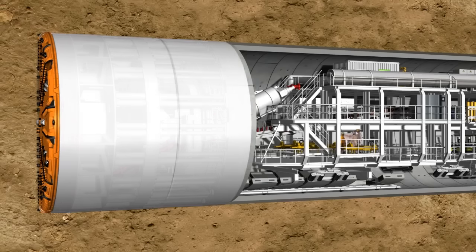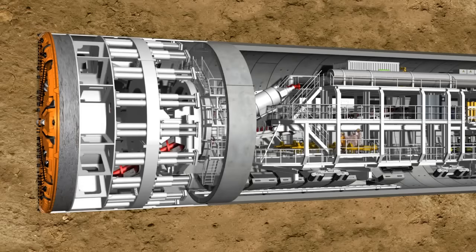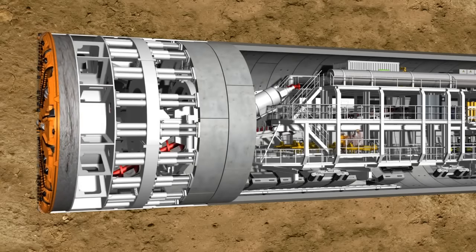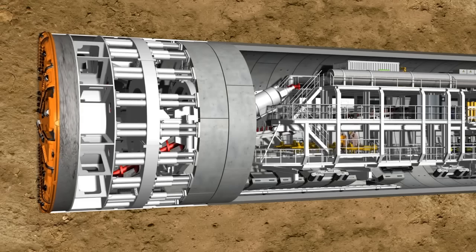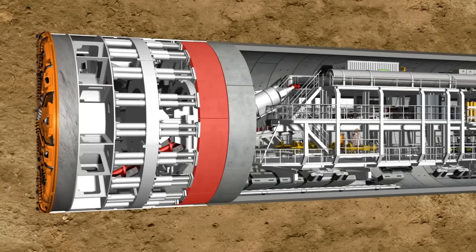The reinforced concrete segments, known as lining segments, are installed under the protection of the shield skin. When the ring building has been completed, the machine can push itself against the new tunnel ring and drill further into the soil.